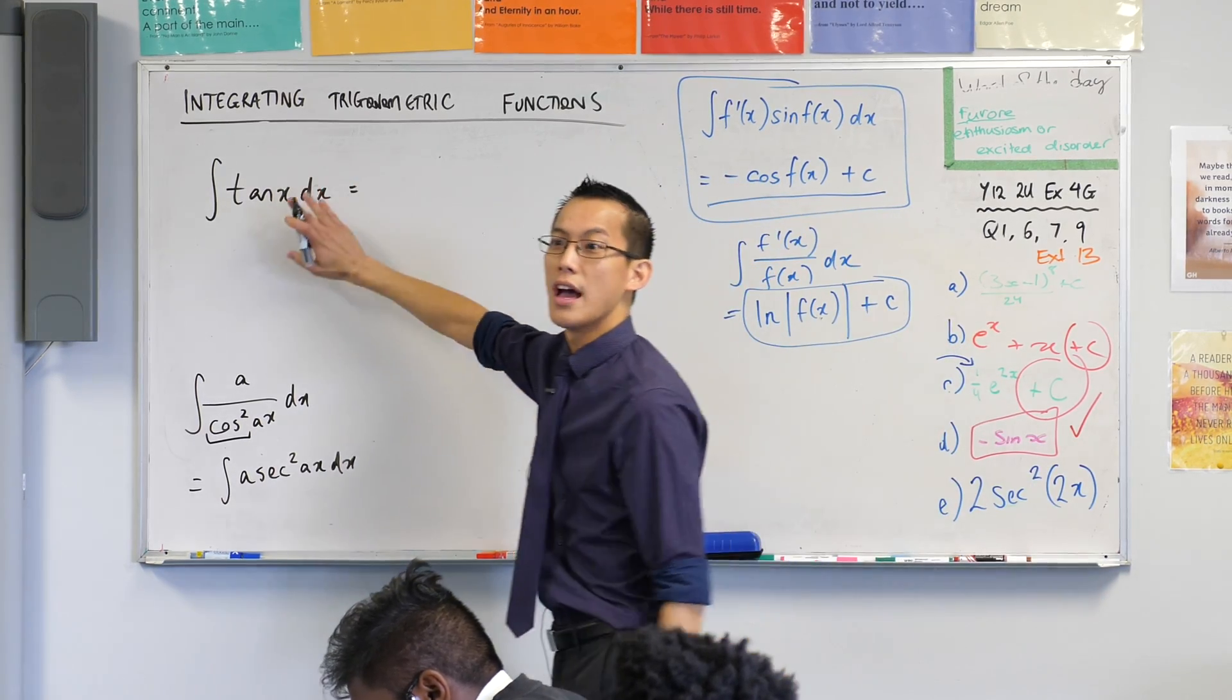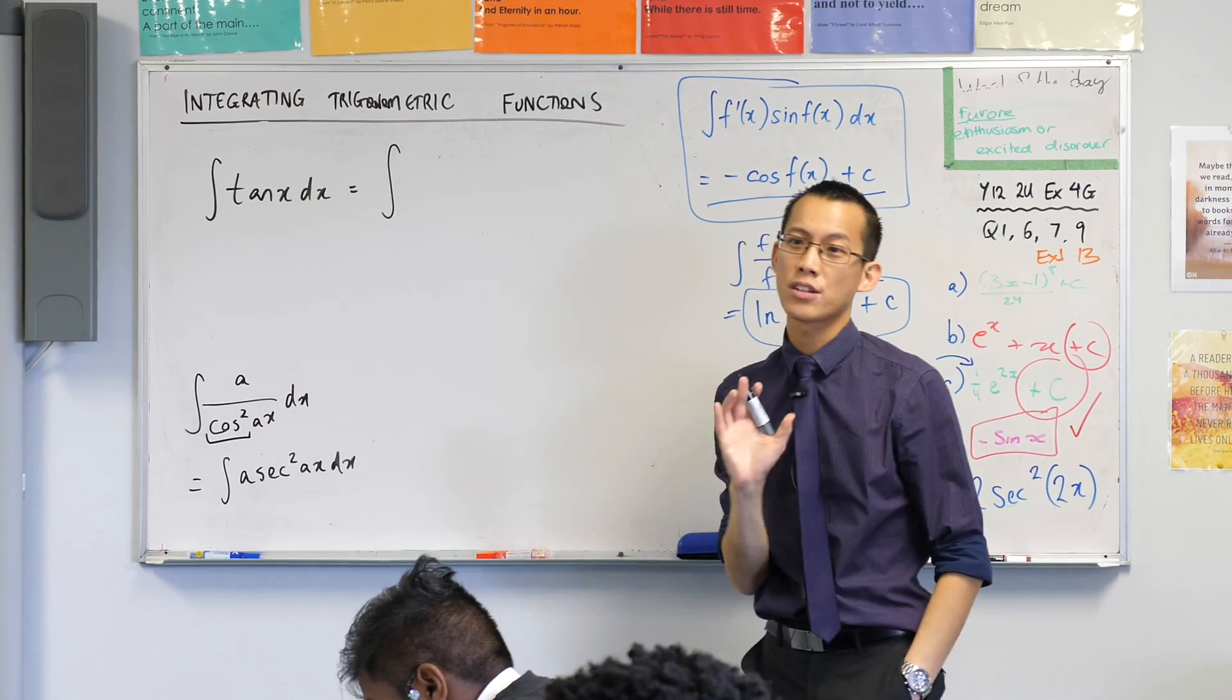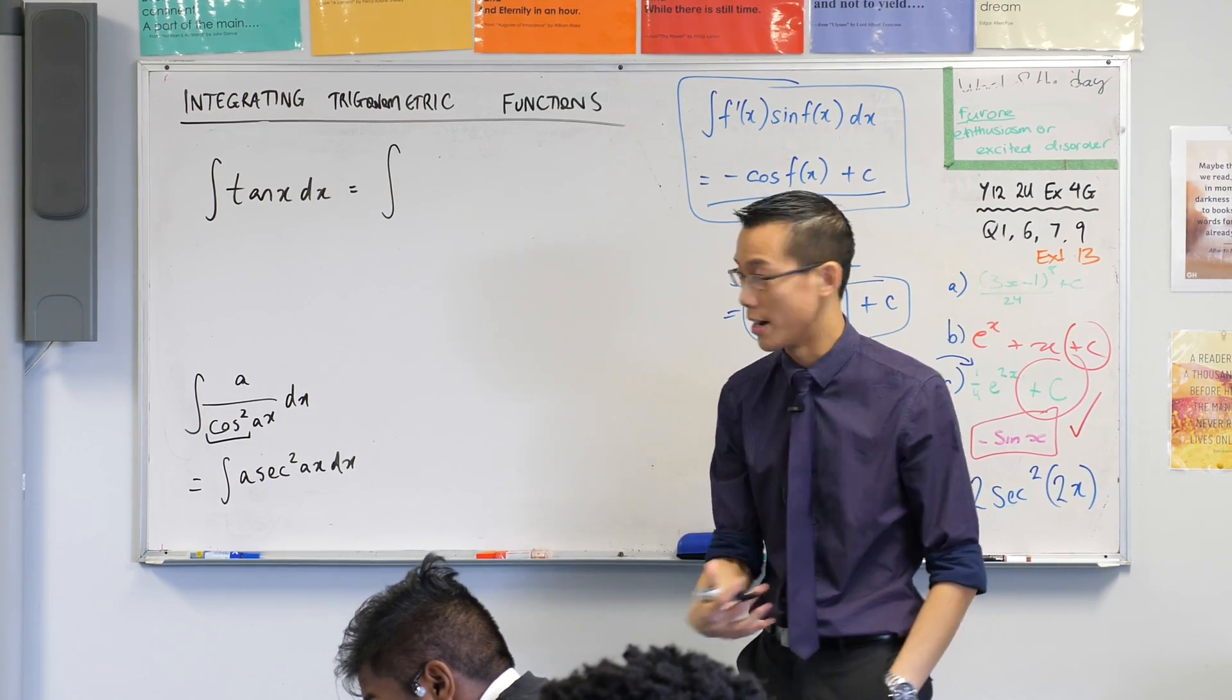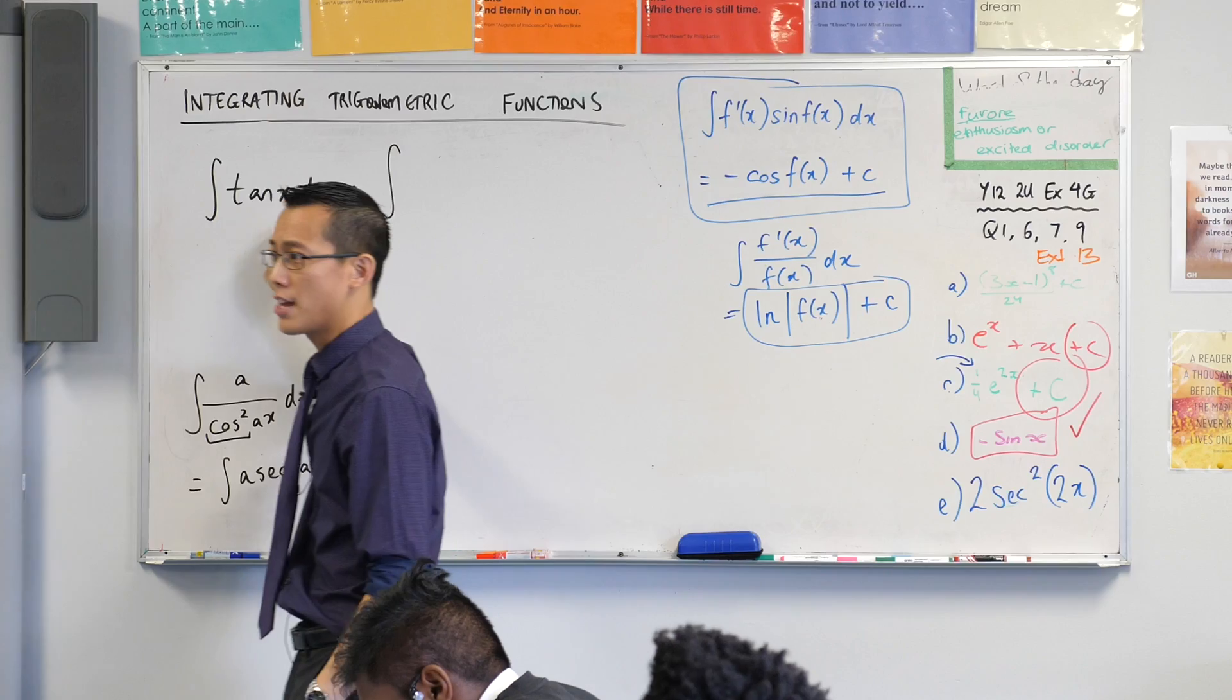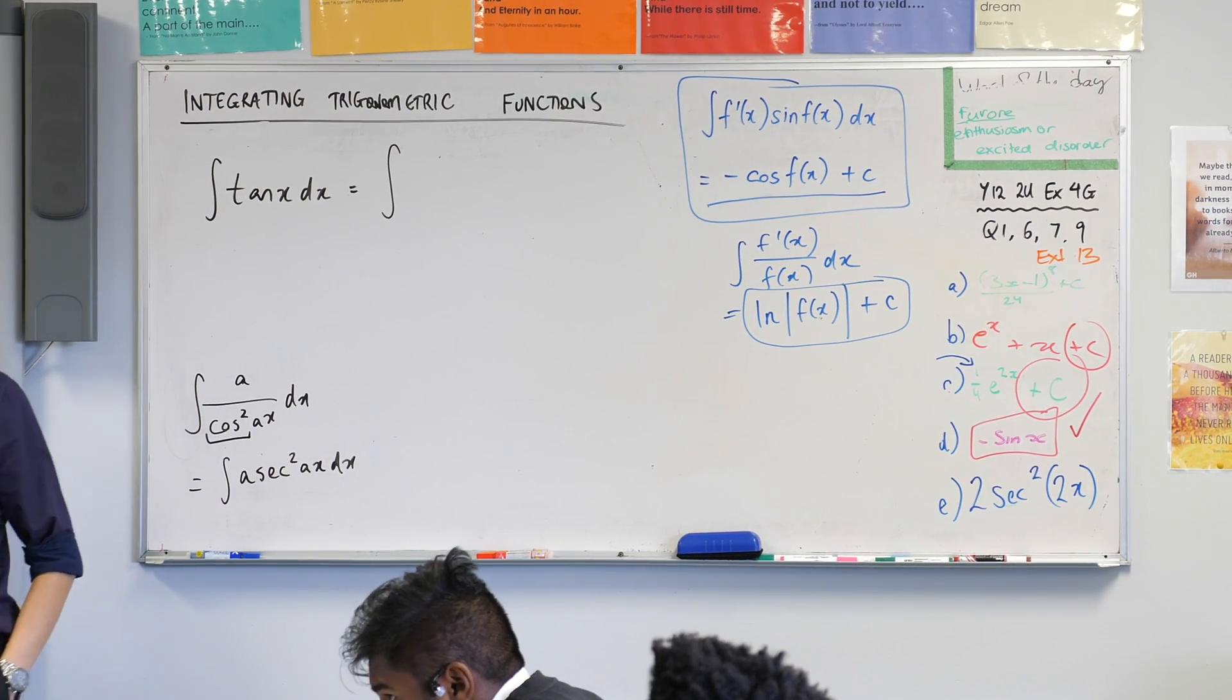Now, the same thing happens here, except it's going to look weird because I'm going to make it look worse before it looks better. Tan x is an abbreviation. It's a trig identity itself. What's it an abbreviation for? Sine over cos.